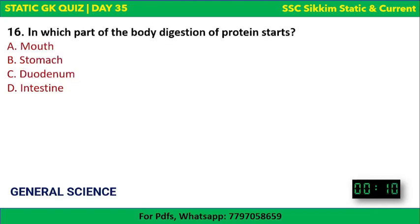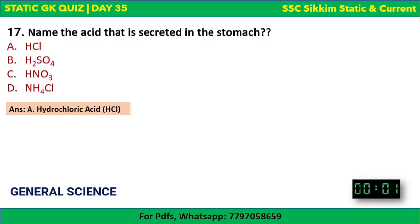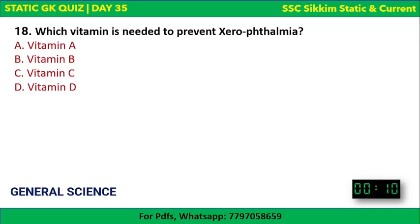Next question: name the acid secreted in the stomach. The stomach's gastric glands secrete gastric juice, which contains hydrochloric acid (HCl), mucus, and the enzyme pepsin. So the acid secreted in the stomach is hydrochloric acid.